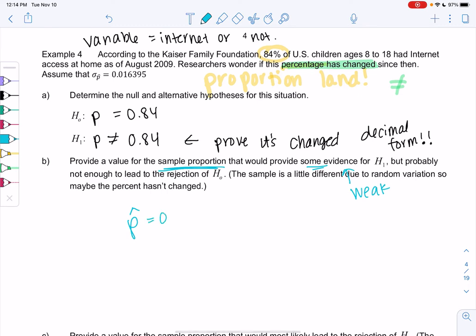So I might choose 85 or even 83. Since we're proving not equal, we can go in either direction. Your choice.